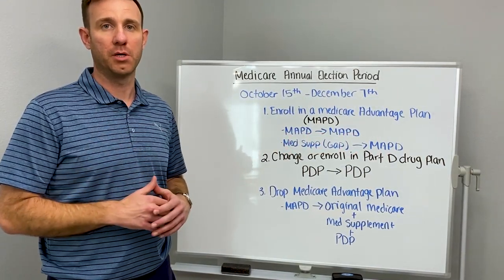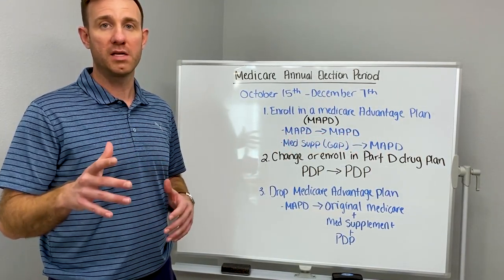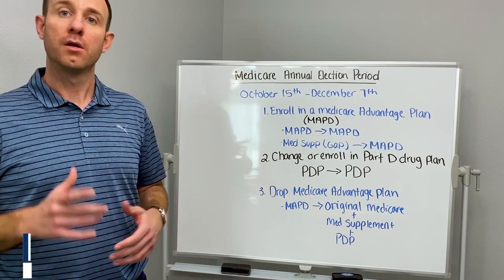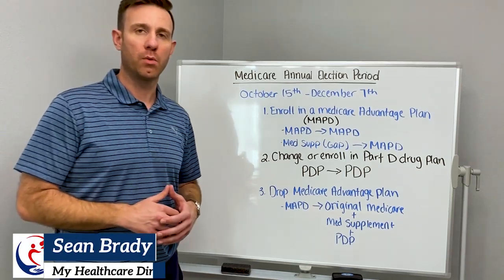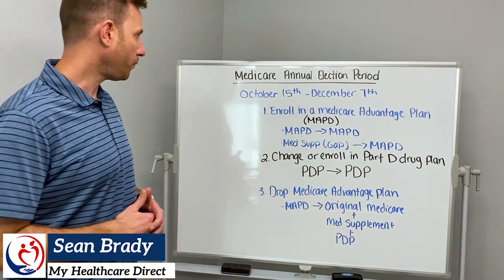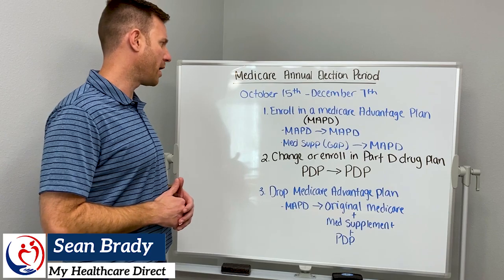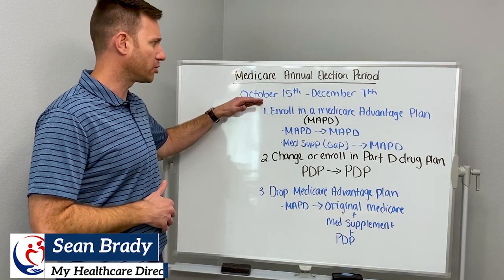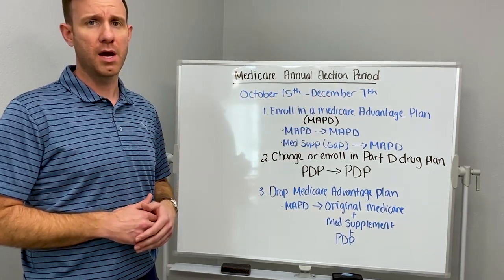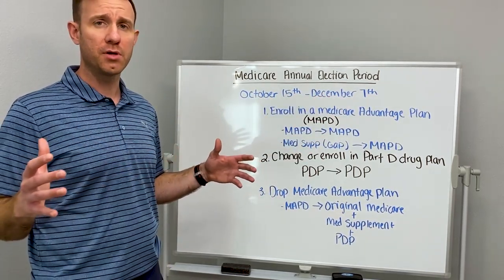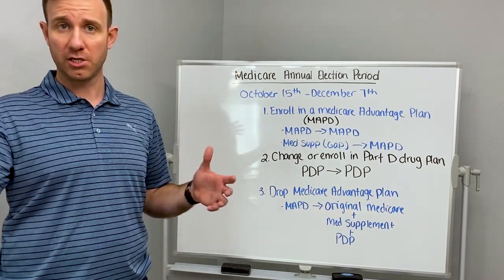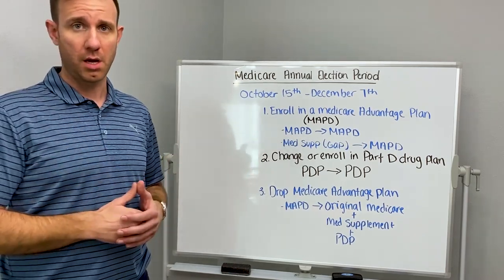Medicare annual election period — what is it, when is it, and what do I need to know? Sean Brady here with My Healthcare Direct. Let's dive right into that. When is it? It's going to be October 15th through December 7th. Anytime during that time period is when you would make changes to your plan if you needed to.